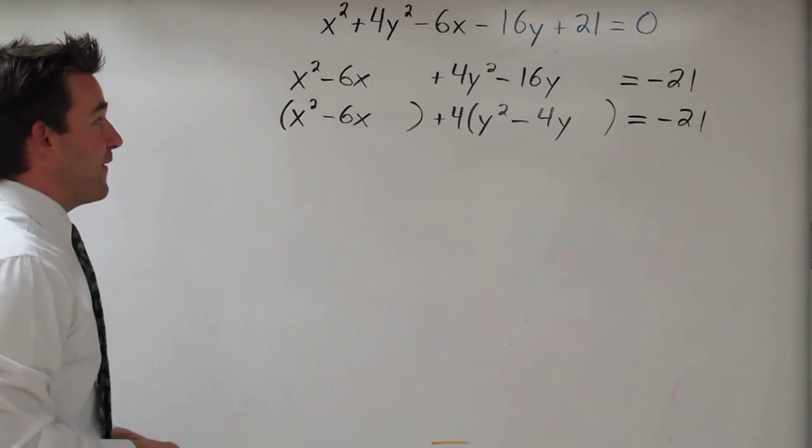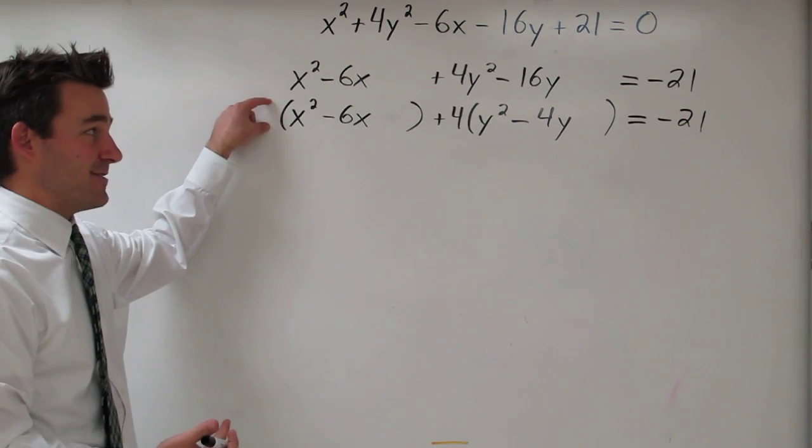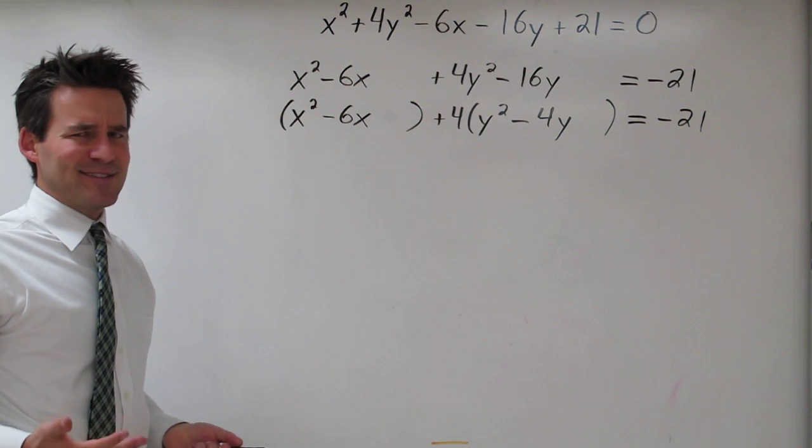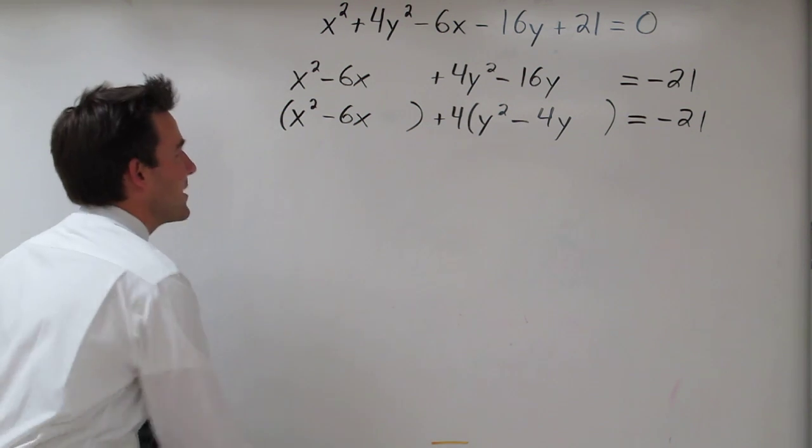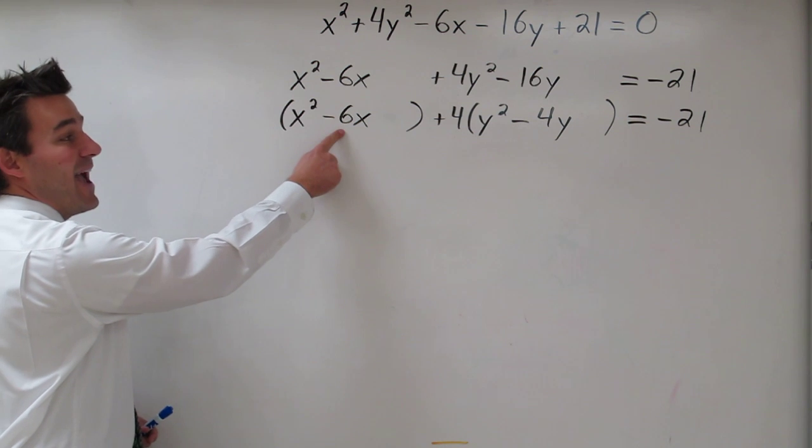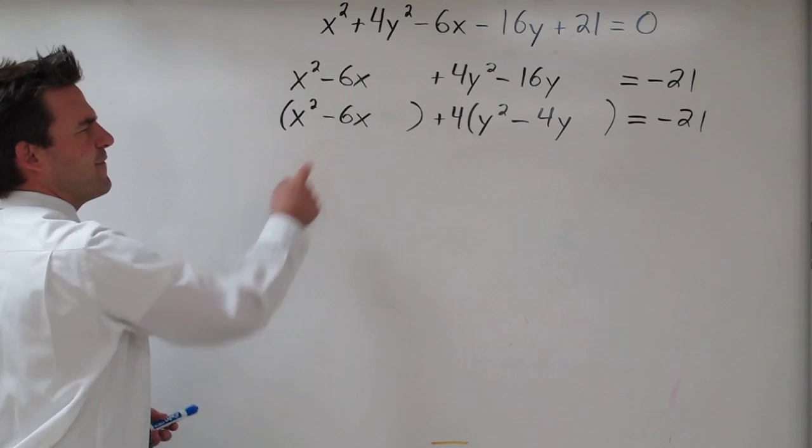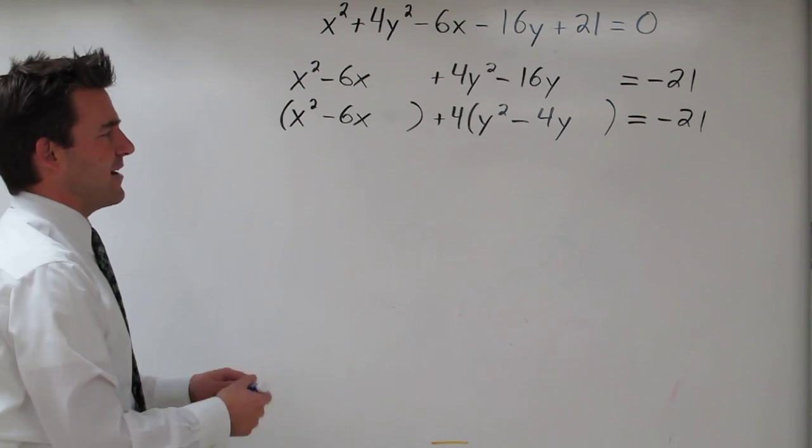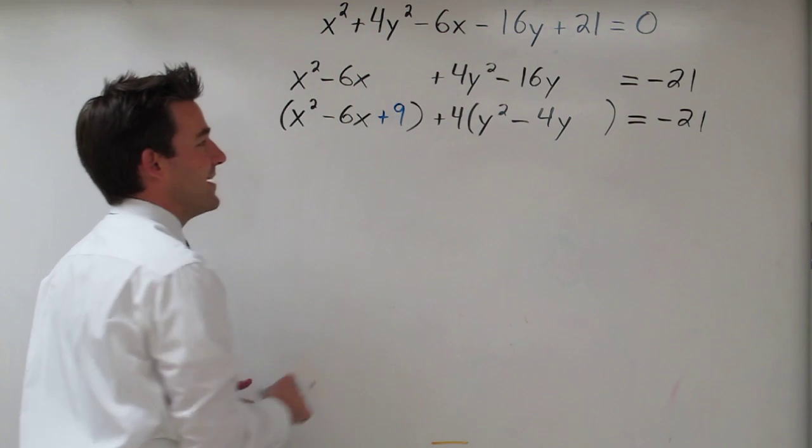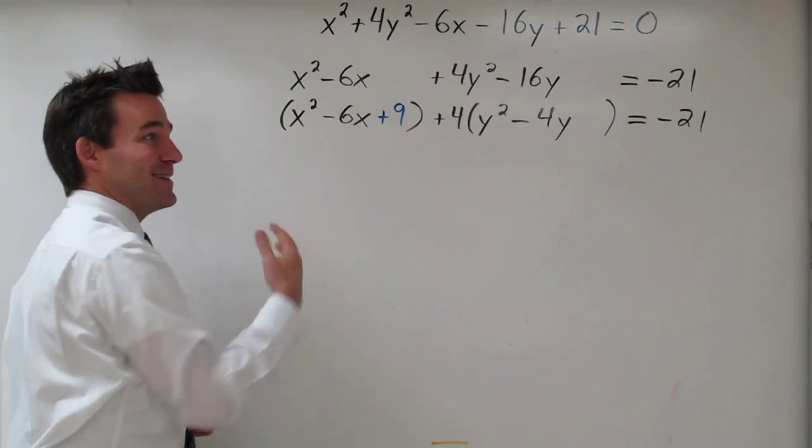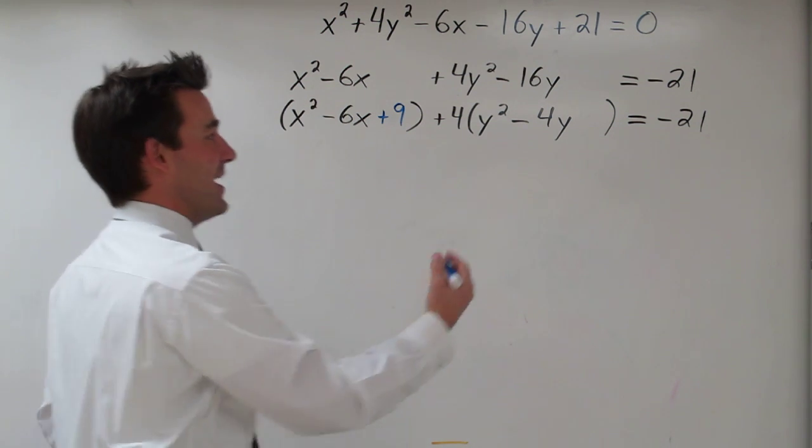Okay, so far we've grouped the variables, and in the next step we factored out any coefficients of the squared term. The next step is actually completing the square. So completing the square involves taking half of the b coefficient and squaring it. So half of negative 6 is negative 3. Square that, you get positive 9. Now if I add 9 to this side, in order to keep my equation balanced, I need to add 9 to the other side.